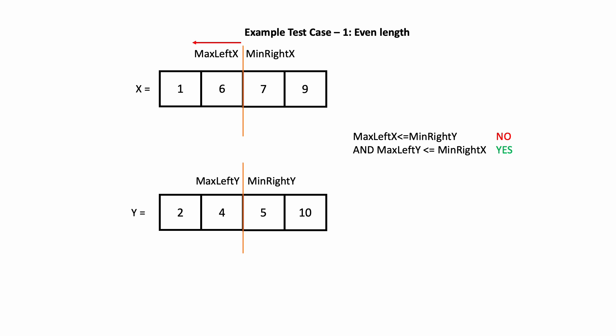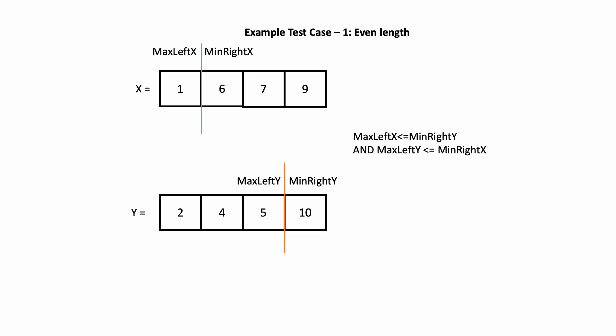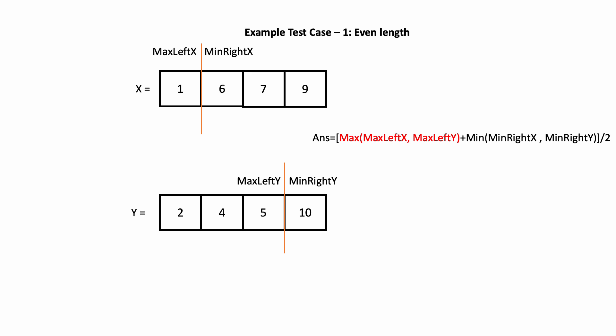Whenever we move the partition of x in one direction, the partition of y moves in the opposite direction — in this case to the right. This is the new partition of arrays x and y. We check if max_left_x ≤ min_right_y and max_left_y ≤ min_right_x. The condition is now satisfied, so we have found the elements of interest: [1, 6, 5, 10]. We found the right partitions.